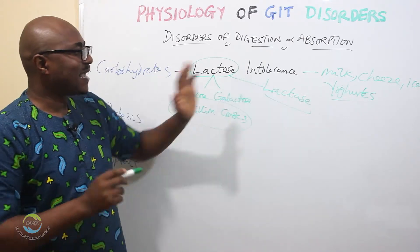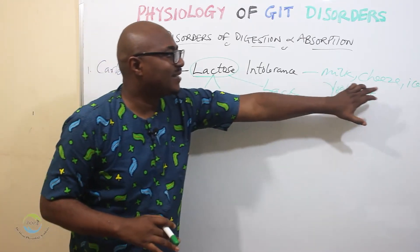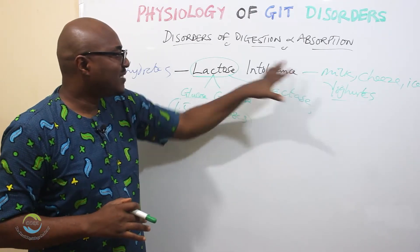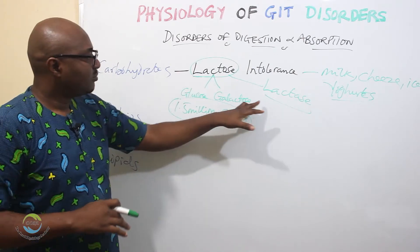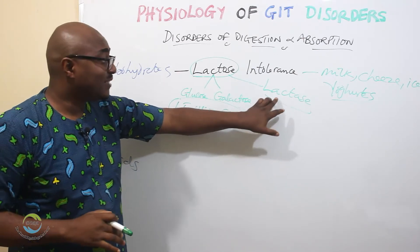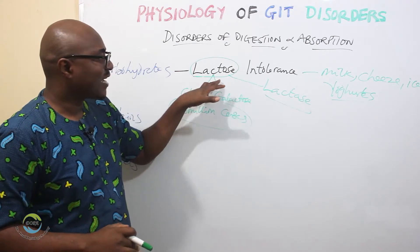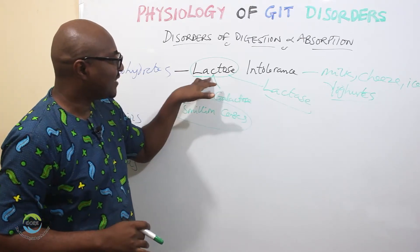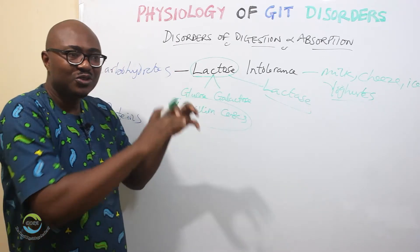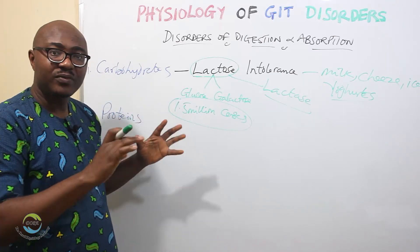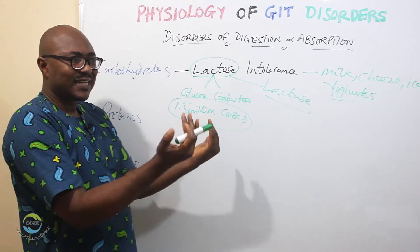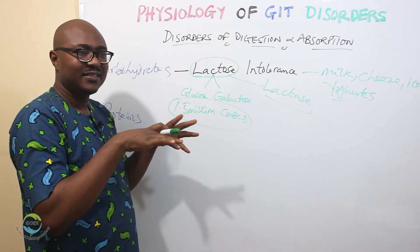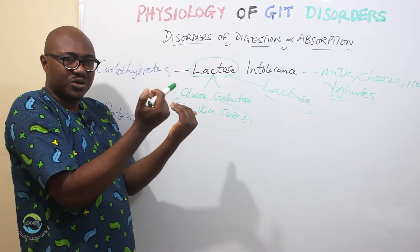The intolerance means that when those who have it take things that contain lactose, they have the inability to digest it. Since lactose cannot be absorbed without first being broken down, and since it cannot be digested, it cannot be absorbed. So it remains in the lumen of the GIT and starts exerting an osmotic effect, drawing water.